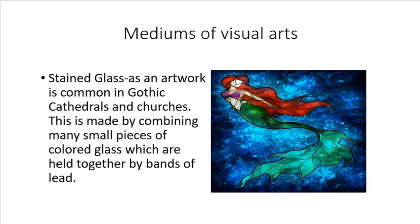The next medium is stained glass, an artwork common in Gothic cathedrals and churches. It is made by combining many small pieces of colored glass held together by lead strips. Colored glasses are compounded together using lead, and this is often used in churches, especially Roman Catholic churches.